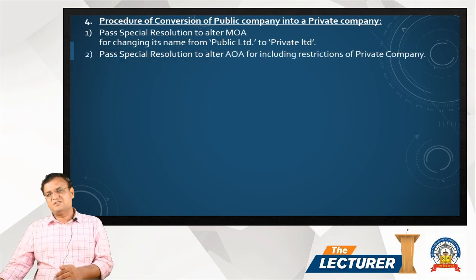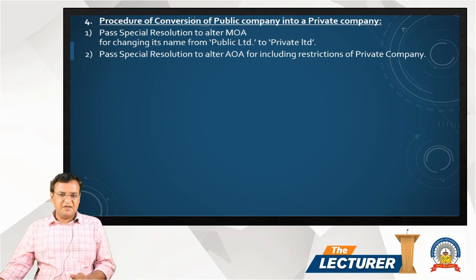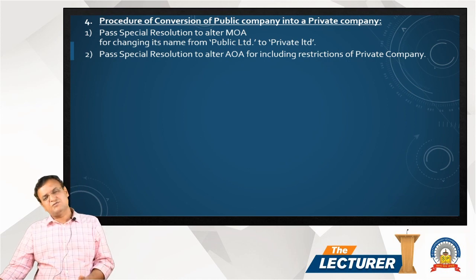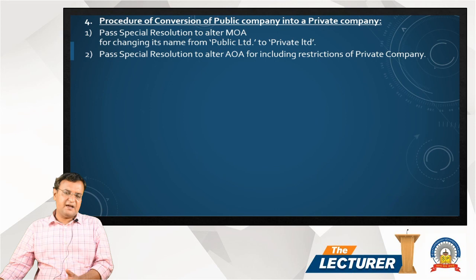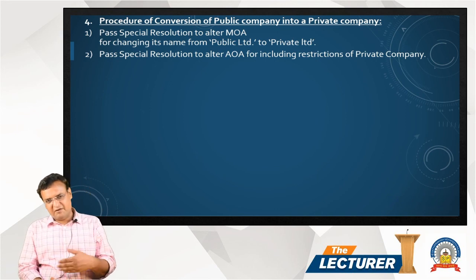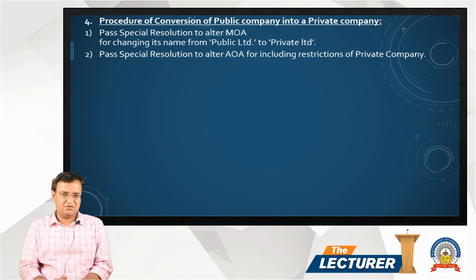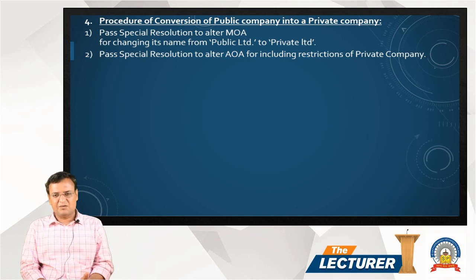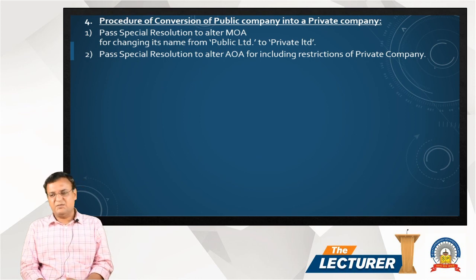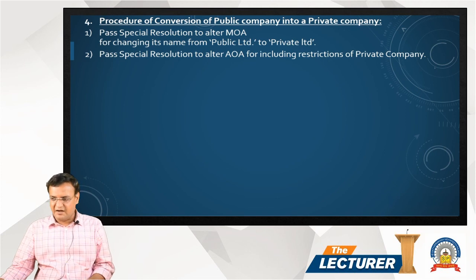Second, pass a special resolution to alter the Articles of Association. Here, instead of removing restrictions as we did before, we are adding restrictions into the articles. We need to add: restriction on the transfer of shares, limitation on the number of members up to 200, and the provision prohibiting invitation to the public to subscribe to securities. A special resolution is required for these alterations.